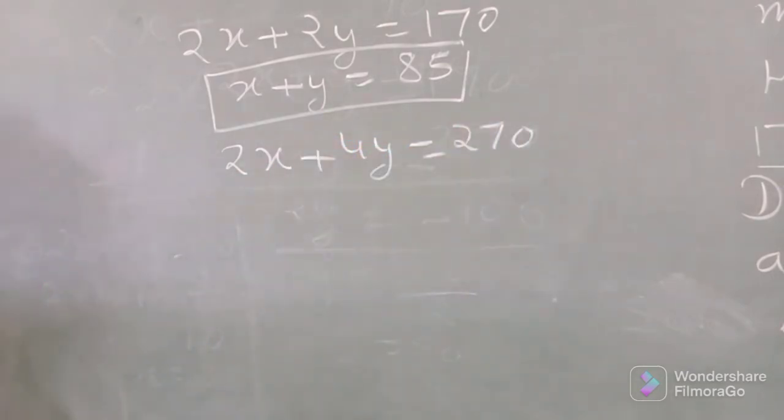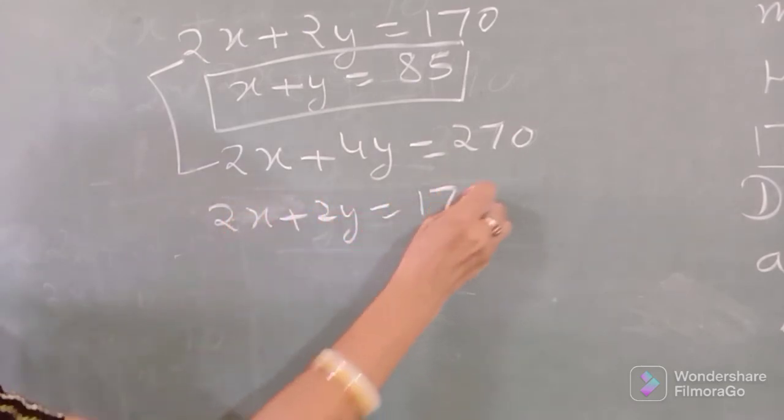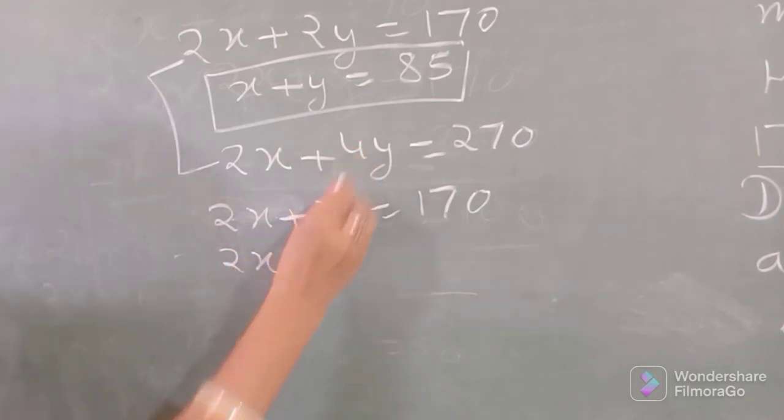यह हमारी equations हैं, अब इन equations को solve करेंगे. यह हमारी है second और यह है first. Solving first and second, हम इन दोनों को solve करेंगे: 2x plus 2y equals 170 and 2x plus 4y equals 270.